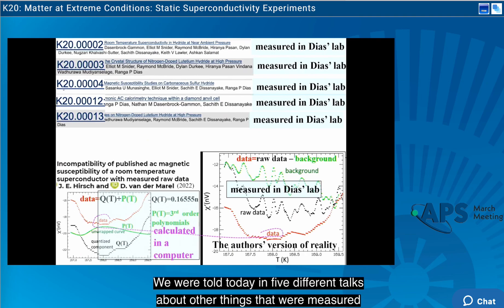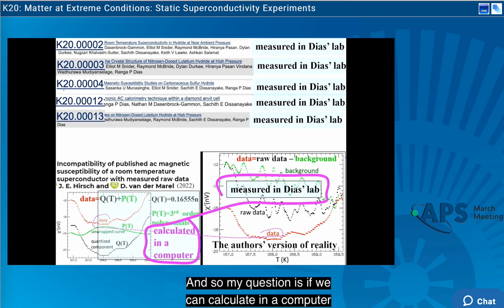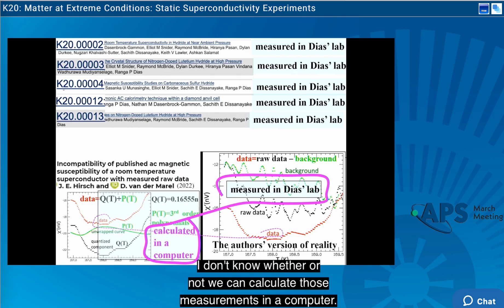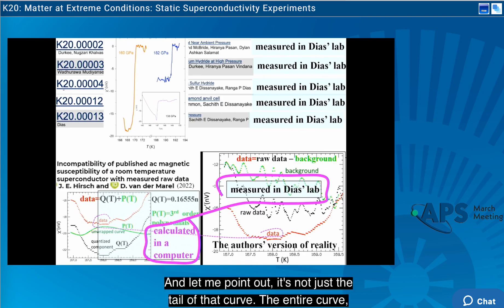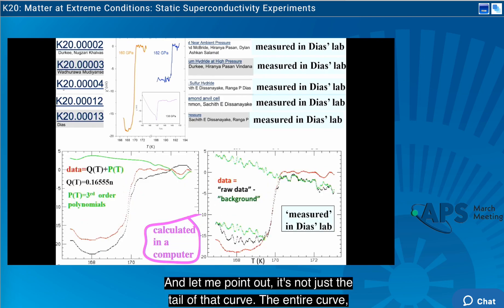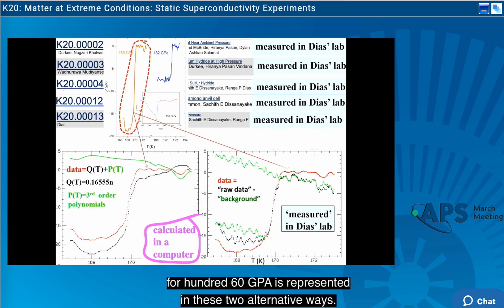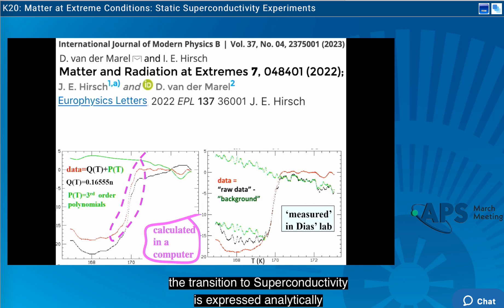We were told today in five different talks about other things that were measured in the lab. And so my question is if we can calculate in a computer these measurements that were done in this lab. I don't know whether or not we can calculate those measurements in a computer. And let me point out it's not just the tail of that curve. The entire curve for 160 GPa is represented in these two alternative ways. And in particular, what's said to be the evidence that transition to superconductivity is expressed analytically.